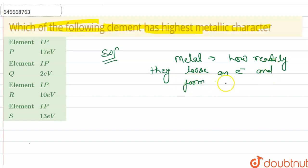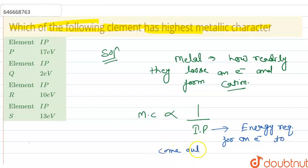Metallic character depends on, or is directly proportional to, one upon ionization potential. Because ionization potential is defined as the energy required for an electron to come out of an atom.